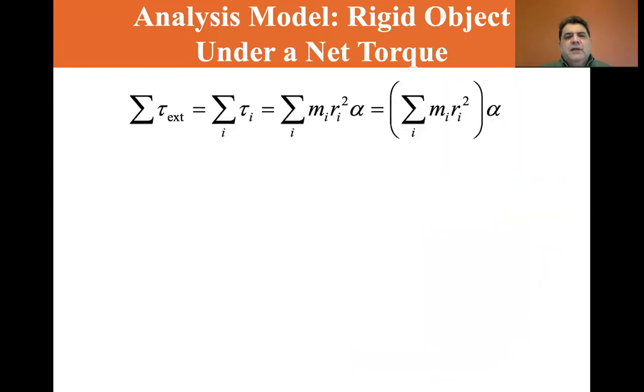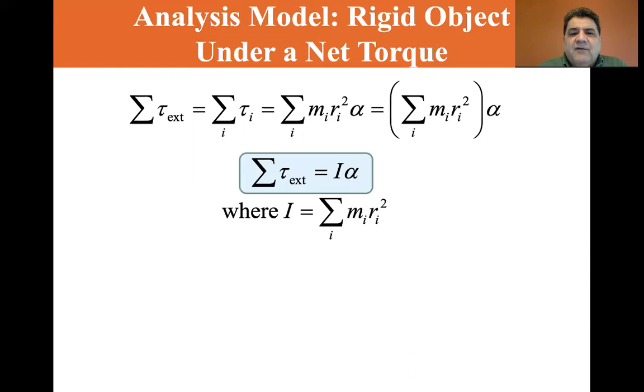So the sum of the external torques is equal to the sum of all the torques of I, and that's equal to all the mass I times RI squared times alpha. So that's equal to, we group it together, the sum of MI RI squared times alpha. So the sum of the external torques is equal to I alpha where I, the moment of inertia, is equal to the sum of MI times RI squared.